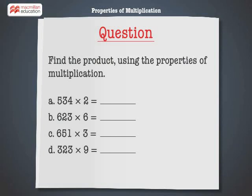Find the product using the properties of multiplication. 534 multiplied by 2 is equal to dash. 623 multiplied by 6 is equal to dash. 651 multiplied by 3 is equal to dash. 323 multiplied by 9 is equal to dash.